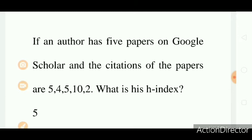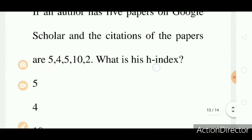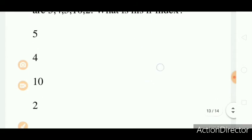Now the question is, if the author has 5 papers on Google Scholar and the citations of the papers are 5, 4, 5, 10, 2, what is his H-index? Options are 5, 4, 10, 2.